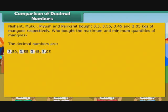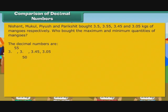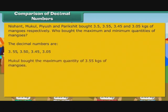All the numbers have 3 to the left of the decimal point. Therefore, we arrange them on the basis of the digits after the decimal point. These are 50, 55, 45 and 05. We are aware that 55 is greater than 50, which is greater than 45, which is greater than 05. Therefore, the quantities in descending order are 3.55, 3.50, 3.45, 3.05. It means Mukul bought the maximum quantity of 3.55 kgs of mangoes, and Parekshit bought the minimum quantity of 3.05 kgs of mangoes.